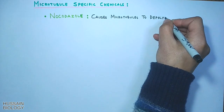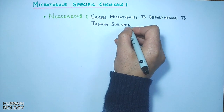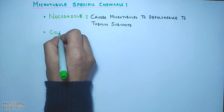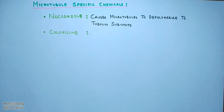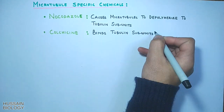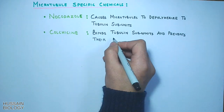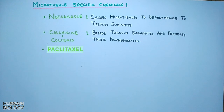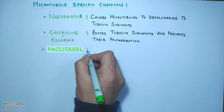First we have Nocodazole — it causes microtubules to depolymerize into tubulin subunits, and by this action it prevents their polymerization. The second is Colchicine — this Colchicine binds tubulin subunits and prevents their polymerization, and the same is done by Colcemid.